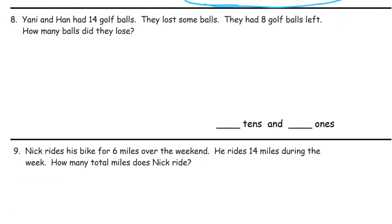Yanni and Han had 14 golf balls. They lost some balls. They had 8 golf balls left. How many balls did they lose? So they have 14 golf balls. 1, 2, 3, 4, 5, 6, 7, 8, 9, 10, 11, 12, 13, 14. They had 8 golf balls left. So we'll cross out 8 and see how many they lost.